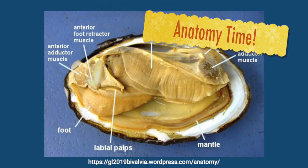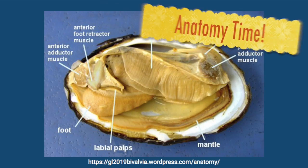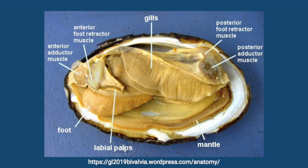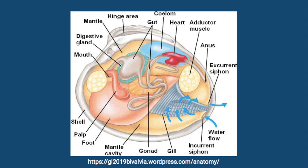So what do bivalves look like? How is this scallop swimming around? Let's take a look at their anatomy. The shell, mantle, visceral mass, and foot — characteristic of the Mollusca common body plan — are seen in bivalves. In addition to these features, bivalves have retractor muscles to control the movement of the foot and adductor muscles to open and close the shell. The gills are used for suspension feeding. The digestive gland, gut, and anus make up the digestive system. The heart pumps the hemolymph through the bivalve's open circulatory system. The gonads function in reproduction, and the excurrent and incurrent siphons facilitate water flow.